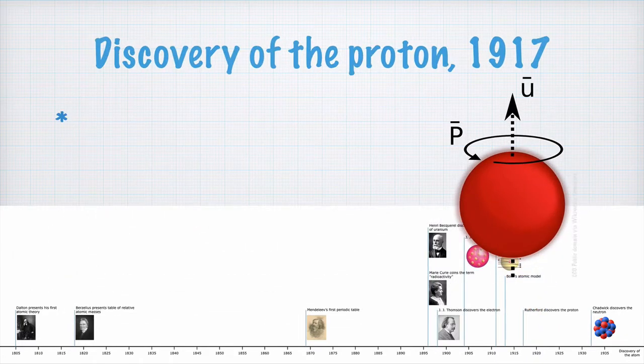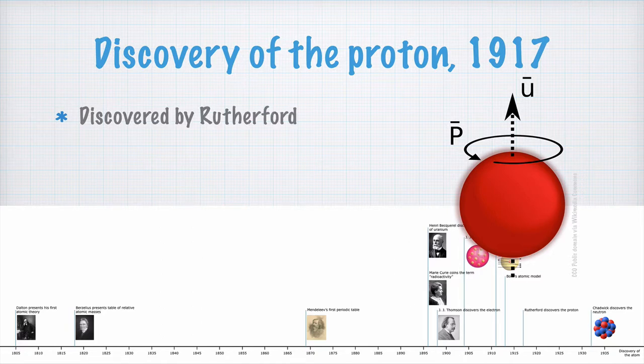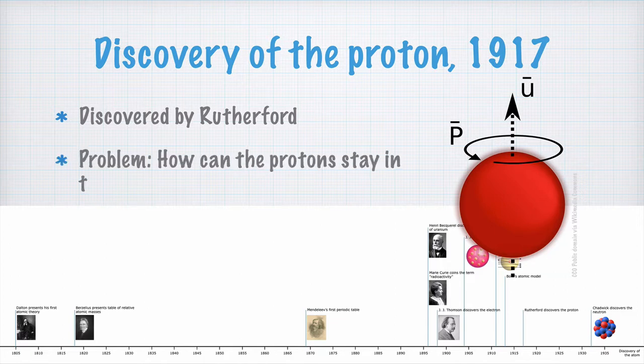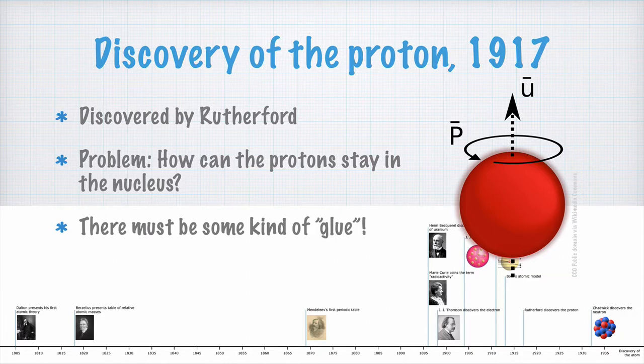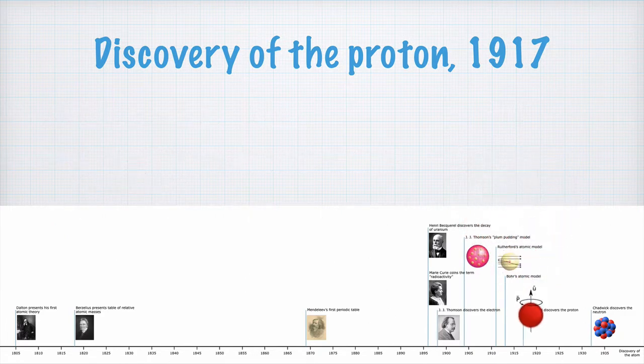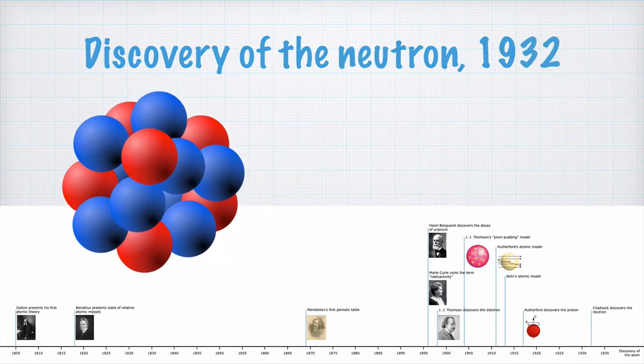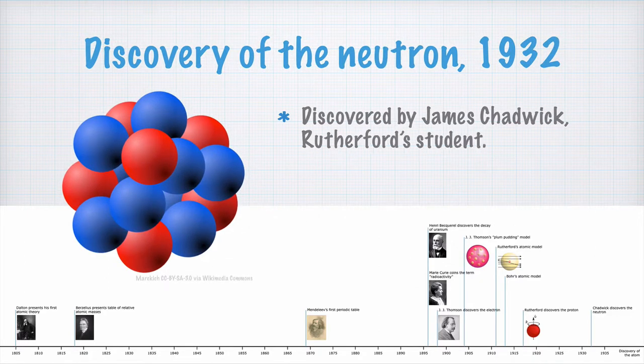A few years after this, Rutherford also discovered the proton. Almost immediately, he realized that there must be yet another building block in the atom. This is because positive charges repel each other, thus there must be some kind of glue that makes the protons stick together in the nucleus. It was Rutherford's student, James Chadwick, who in 1932 discovered the neutron, which had been predicted by Rutherford. So, in 1932, all the main building blocks of the atom had been discovered.